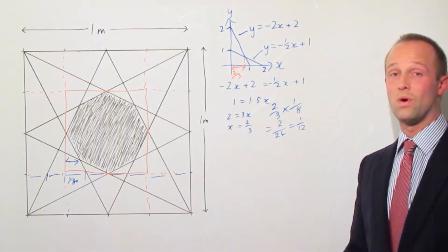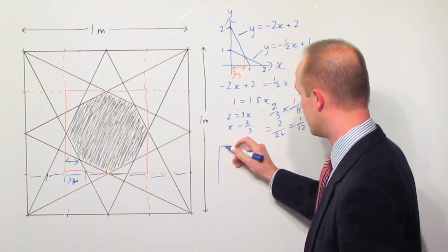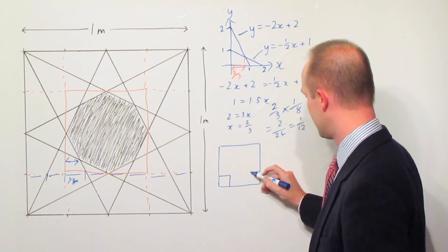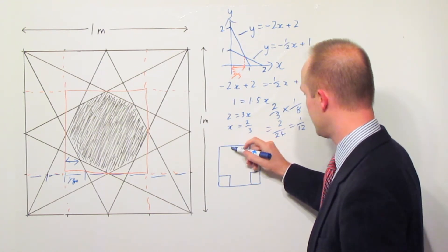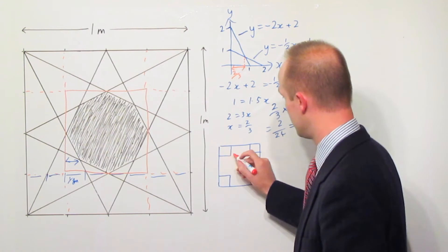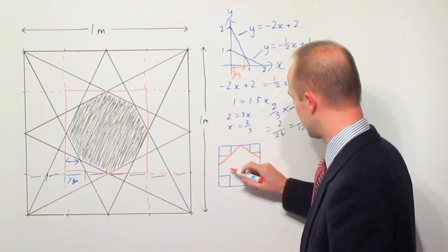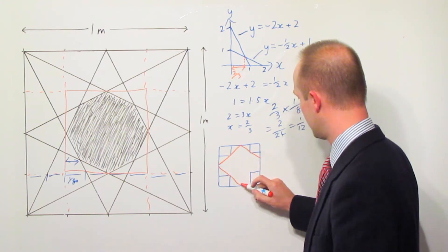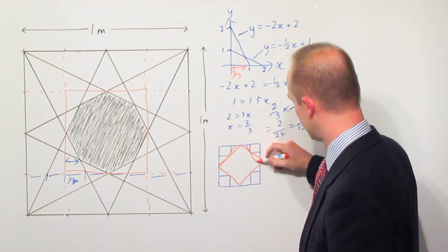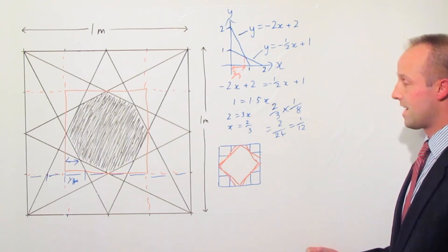Now the question is why am I doing all this — what is the point of going through all these steps? Well, we can now redraw this centre section. We've got a square at each corner, and we've got the lines coming across — one going like that, another going like that, another going like that, and another going there. Then we've got the other ones like that, like that, like that, like that. Not very neat I'm afraid but you get the idea.